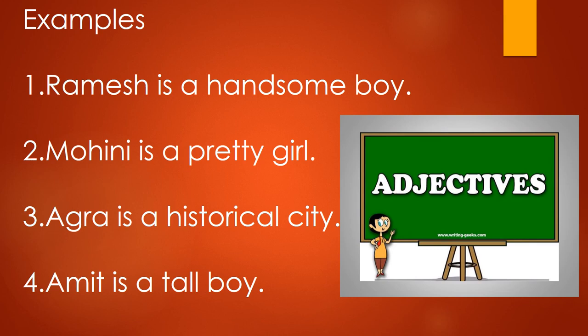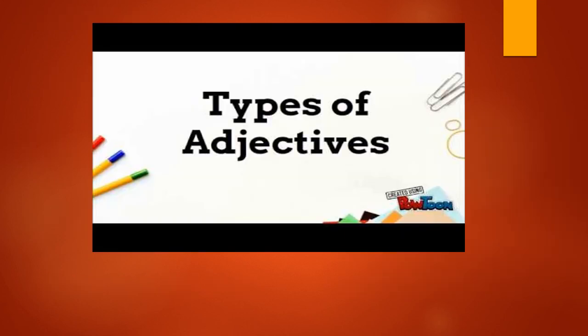So an adjective is a word that adds something to the meaning of a noun. Words that describe people, animals, things and places are called adjectives. All describing words are adjectives and they describe nouns. In further slides, we will learn more about adjectives and their types.